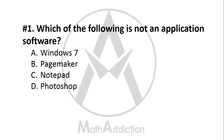Question No. 1: Which of the following is not an application software? Option A: Windows 7, Option B: Pacemaker, Option C: Notepad, Option D: Photoshop. The right answer is Option A — Windows 7. Windows 7 is an operating system, so it falls under the system software category, not application software.